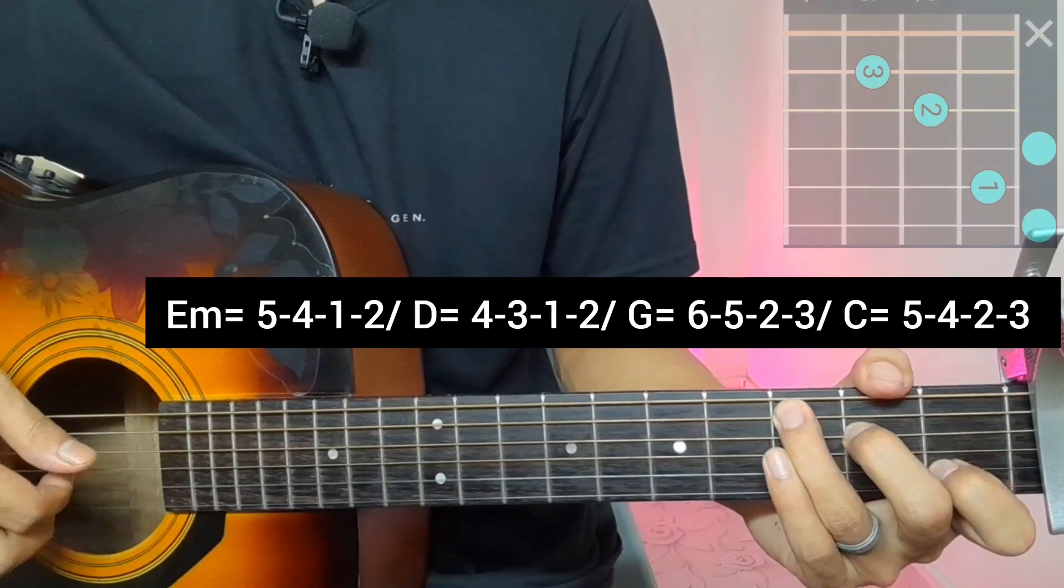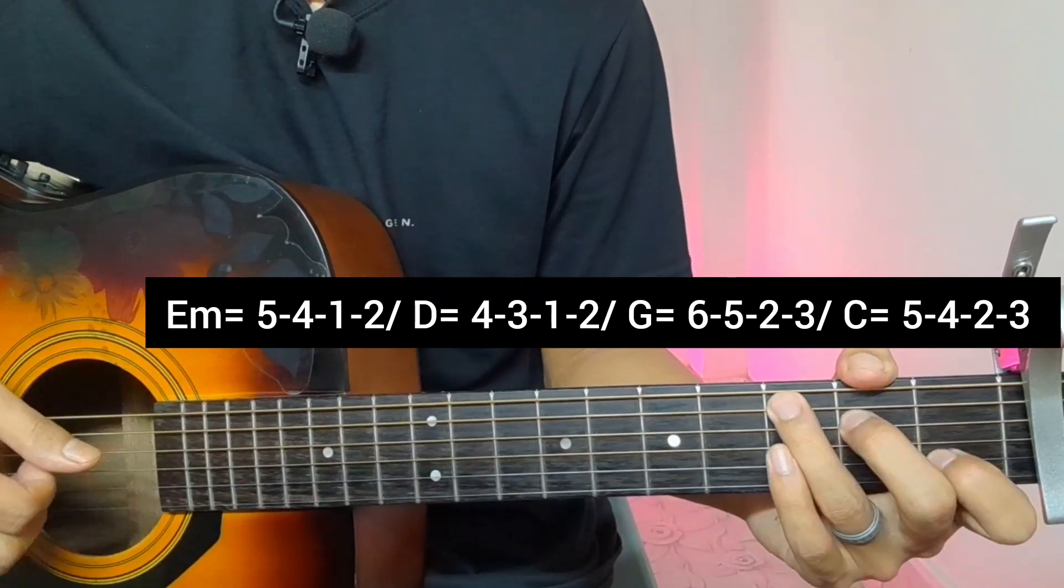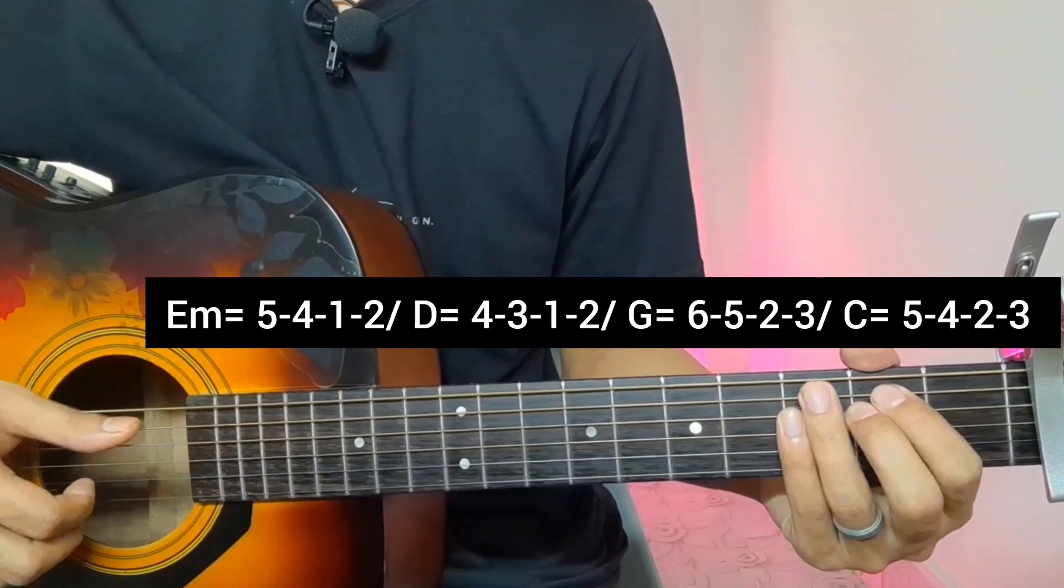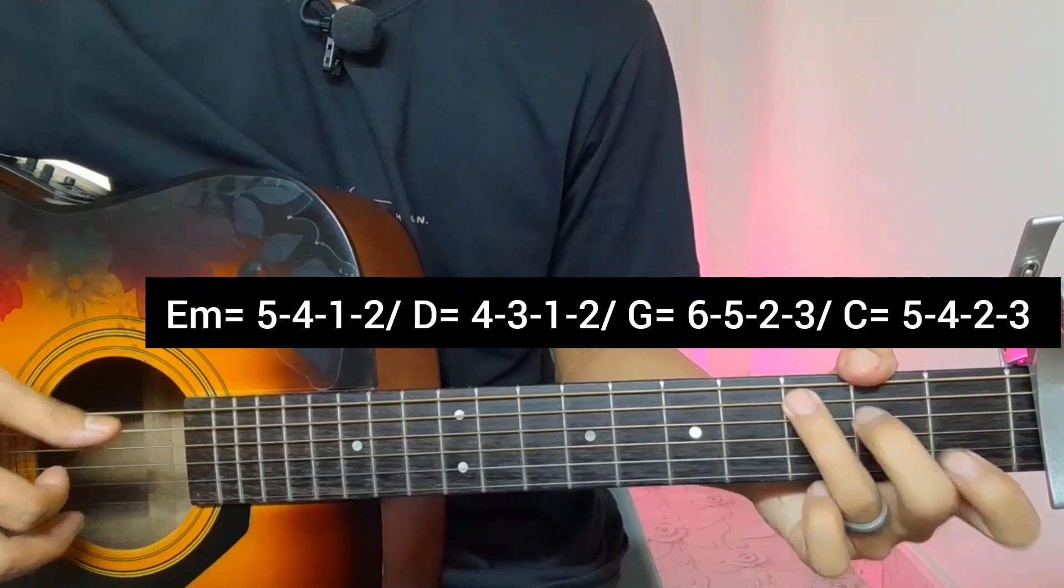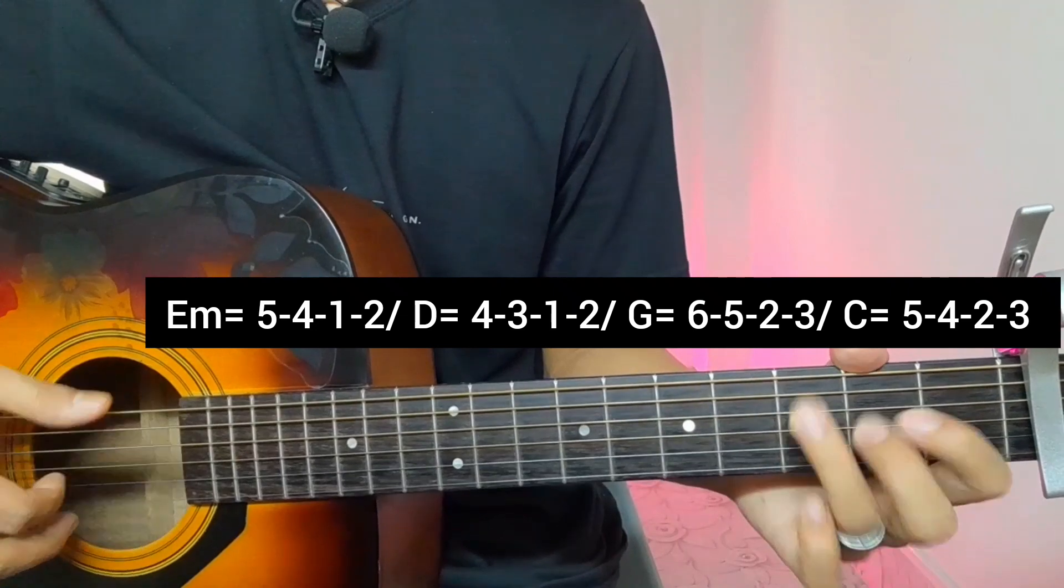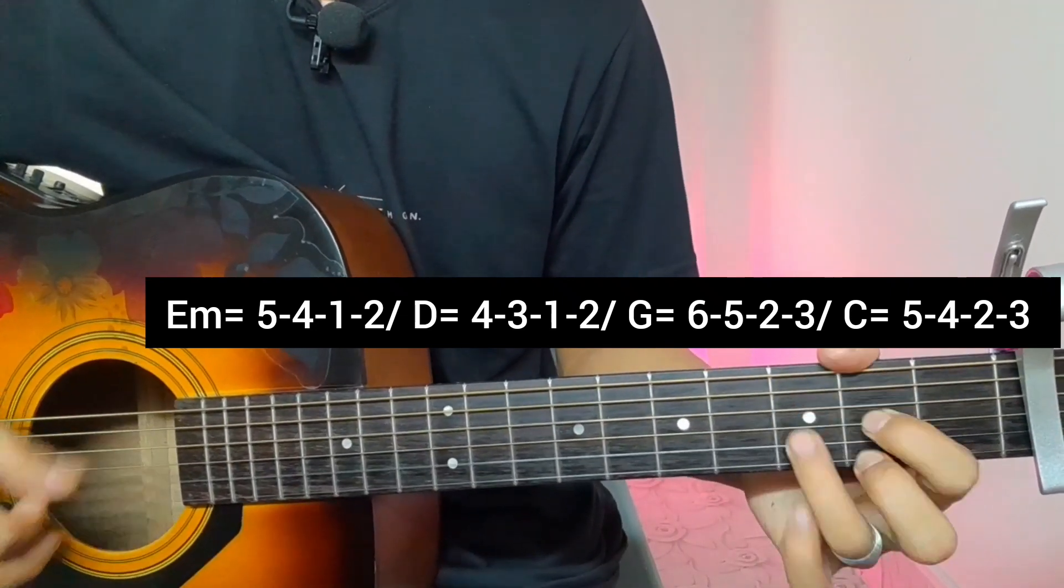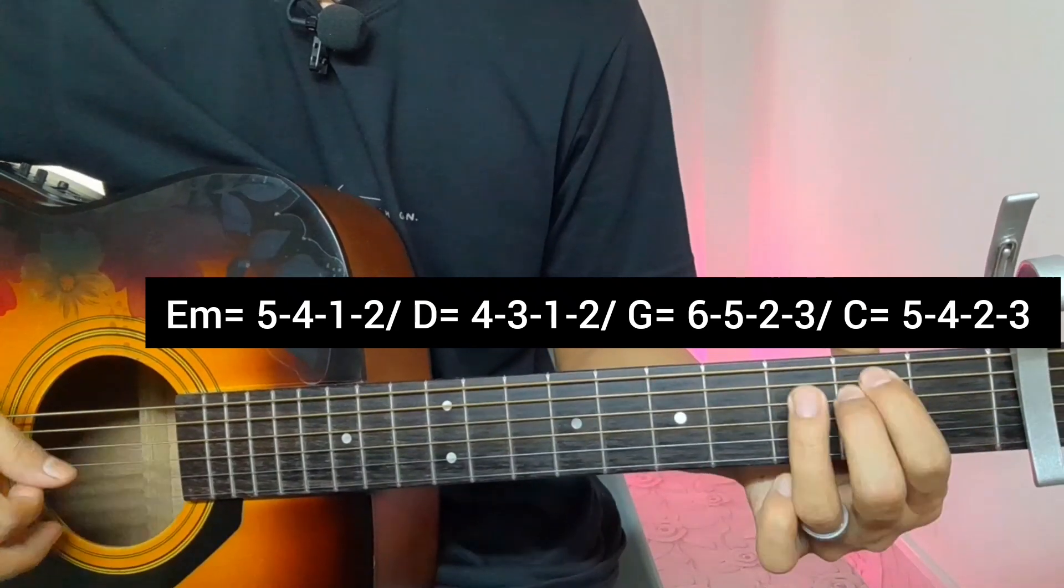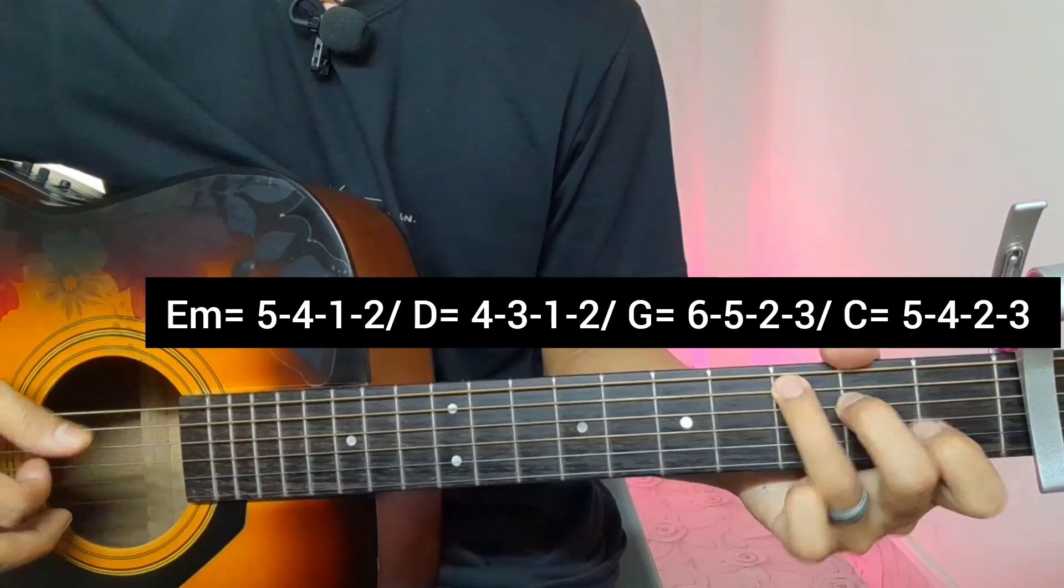So for the plucking part, E-minor, D-major, G-major and C-major. Let me demonstrate this progression again: E-minor, D-major, G-major and C-major. This is the plucking part of the song.